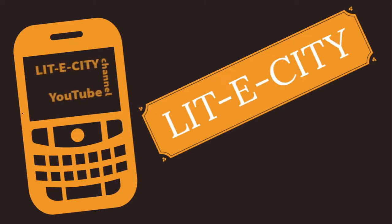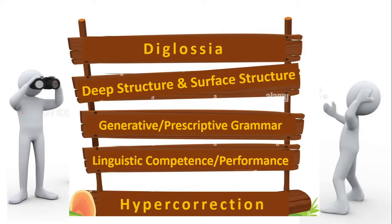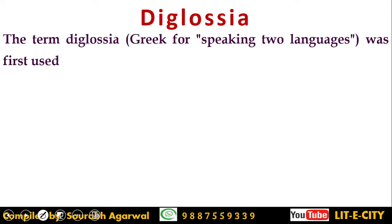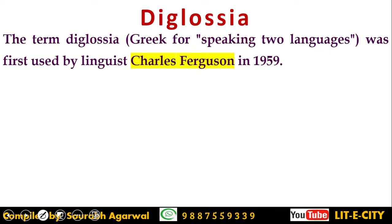Hello and welcome back, dear friends, at the LitECT YouTube channel. At present we are discussing some important linguistic terms in this series. In this tutorial we are going to discuss some very interesting and important terms related to linguistics and different branches of linguistics. We will cover today: diglossia, deep and surface structure, generative and prescriptive grammar, linguistic competence and performance, and hypercorrection.